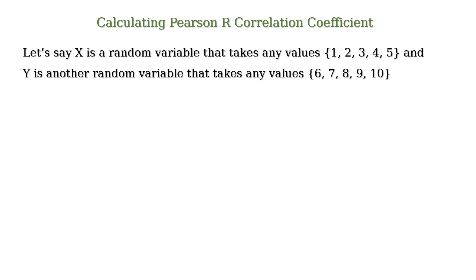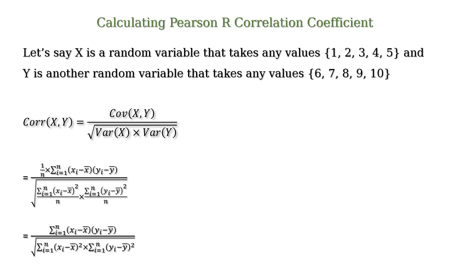Let's say x is a random variable that takes values 1, 2, 3, 4, 5, and y is another random variable that takes values 6, 7, 8, 9, and 10. And we want to find out the Pearson R correlation coefficient between x and y.